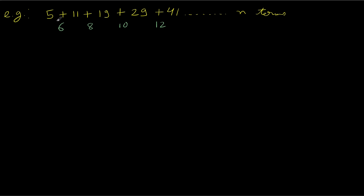Let's check if it is a GP. If it is a GP, 11 by 5 is not equal to 19 by 11. So this is also not a geometric progression. So what do we do now? It is neither a GP nor an AP, and we can't apply the formula that we learned.